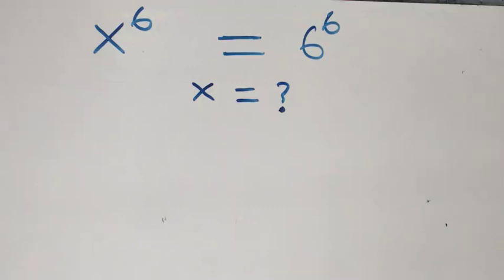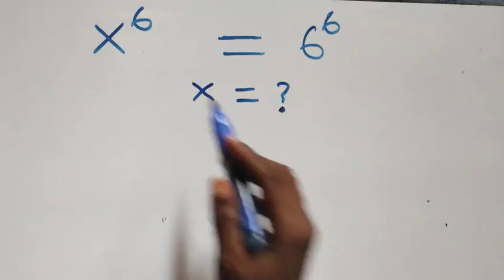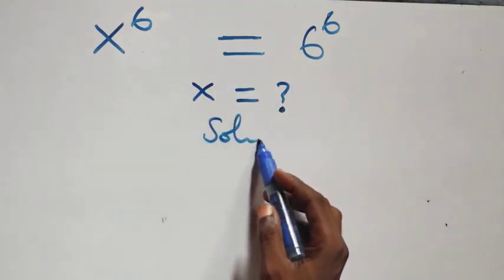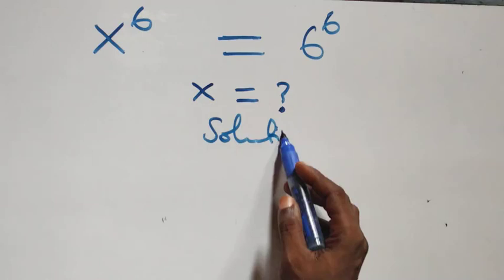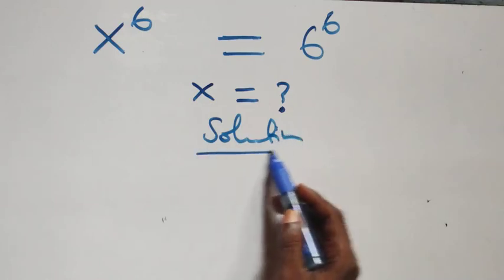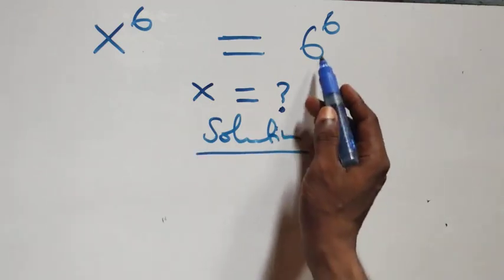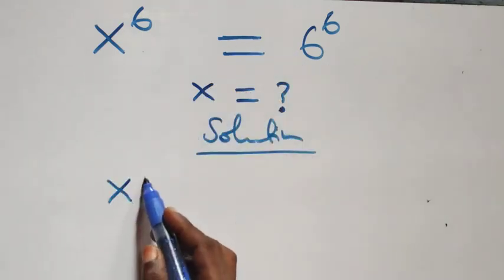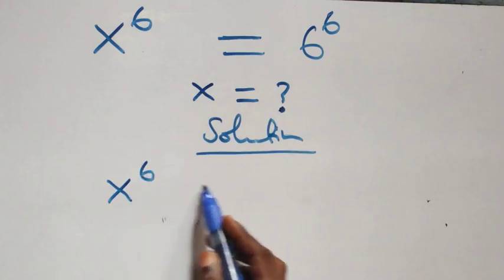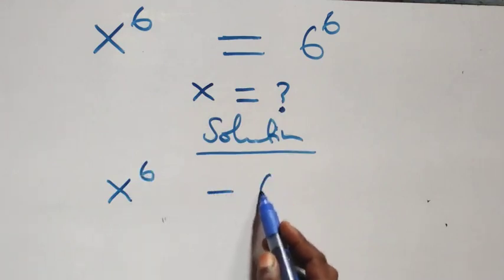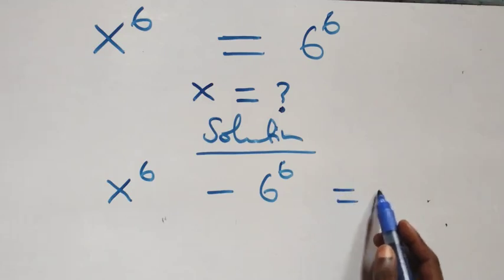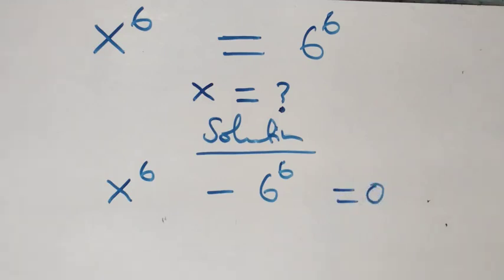Hello, you're welcome. Here we solve a nice exponential equation. We take 6 raised to power 6 to the left-hand side and we have x raised to power 6 minus 6 raised to power 6 equals 0.